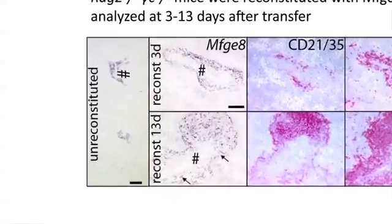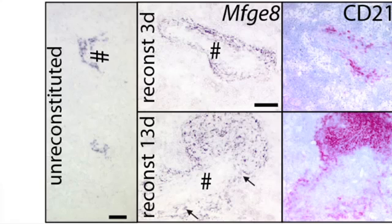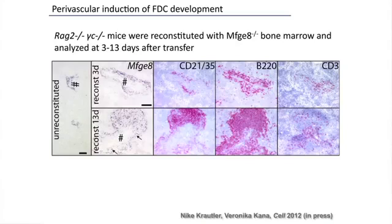What we did was to take bone marrow cells and inject them into mice that are genetically engineered to be devoid of follicular dendritic cells. What we found is that injecting the hematopoietic cells immediately led to a blossoming of MFG8-positive cells around the vessels. After three days and after 13 days, you see that a lymph follicle is now being created around the area where the cells have arisen — showing in real time how the lymph follicle arises and how it is structured by MFG8-positive cells. Because these cells are around the vessel, we thought they might be pericytes.